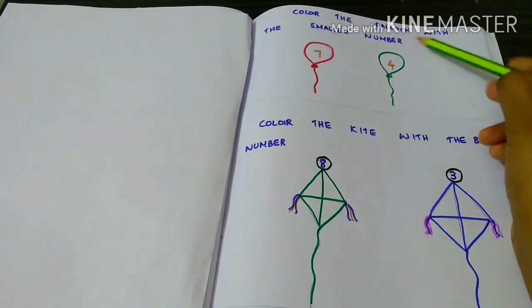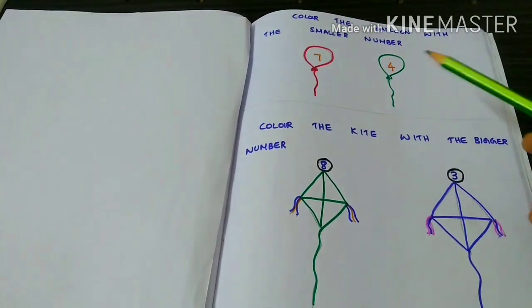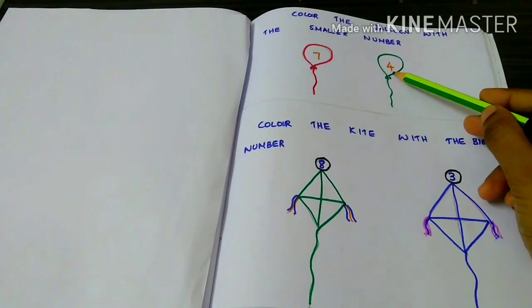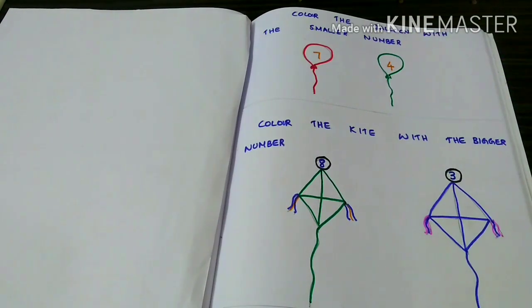Color the balloon with the smaller number. 7, 4. 4 is the smaller number so we have to color it.